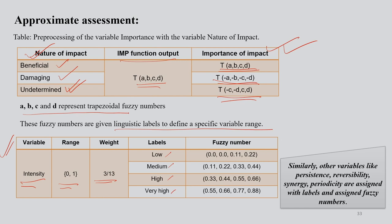How to associate linguistic levels with numbers is the challenge. If it's low, fuzzy numbers look like this; if medium, they look like this; if high, like this; if very high, like this. Similarly, other variables like persistence, reversibility, synergy, periodicity are assigned with these levels and fuzzy numbers.